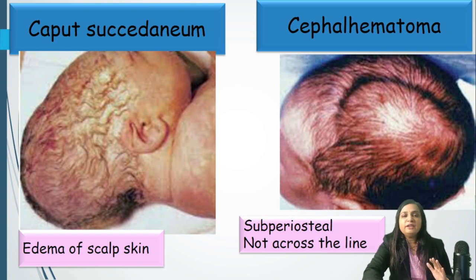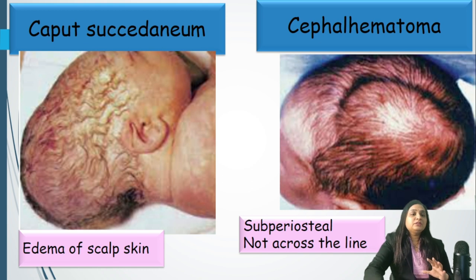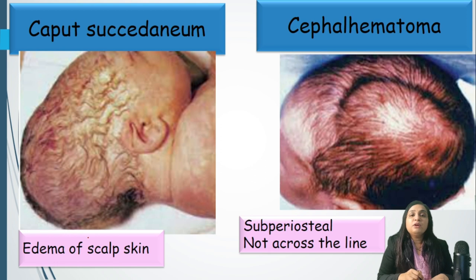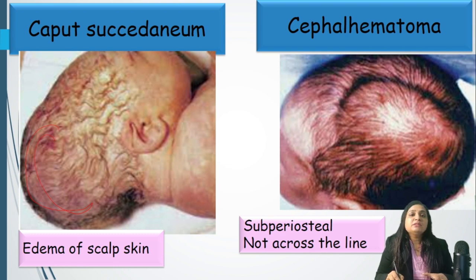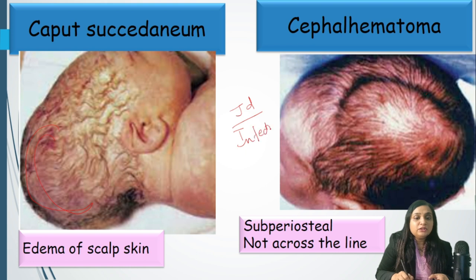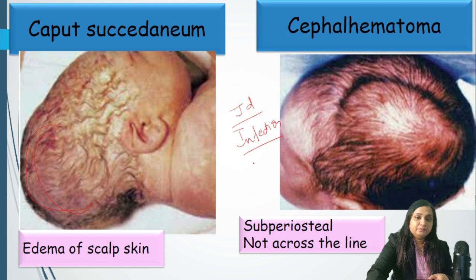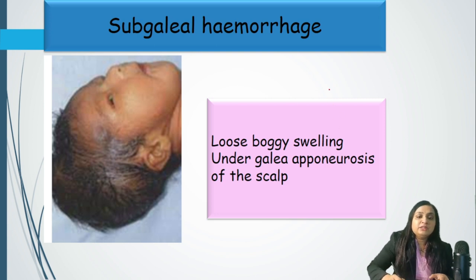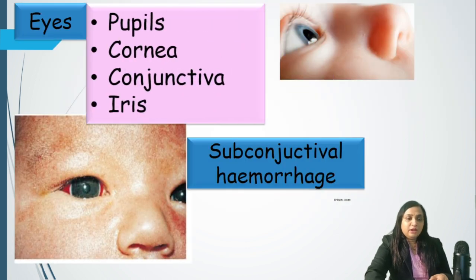On the skin of the scalp, we need to see a very important finding: caput succedaneum or cephalohematoma. Caput succedaneum is edema of the scalp seen because of the dependent part due to vaginal delivery — it is a soft swelling seen all over the scalp and it crosses the suture line. Cephalohematoma is a subperiosteal collection of blood, not present at birth since blood collection takes time; it does not cross the suture line. It can result in jaundice or secondary infection/abscess. Subgaleal hematoma is a collection of blood beneath the galea aponeurosis of the scalp, associated with traumatic delivery or instrumentation.